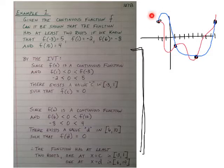And so we're going to look at the first interval from negative 3 to 1, and since f of x is a continuous function, and f of 1 is less than 0, which is less than f of negative 3, and I plugged in those values so we can see it,